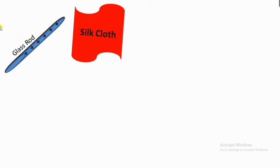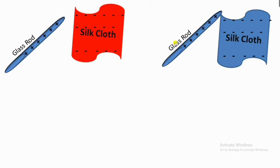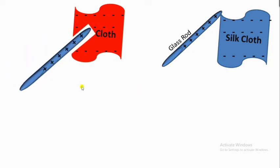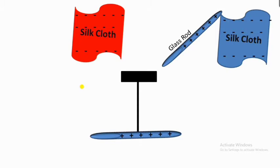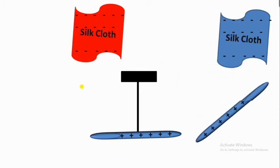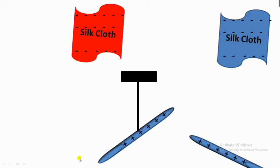When a glass rod is rubbed with silk cloth, both of them get charged — the glass rod gets positively charged and the silk cloth gets negatively charged. Similarly, if you take another pair of glass rod and silk cloth, you again get a positive glass rod and negative silk cloth. So both glass rods will have the same kind of charge. When we keep one glass rod and bring another glass rod near it, they repel each other.